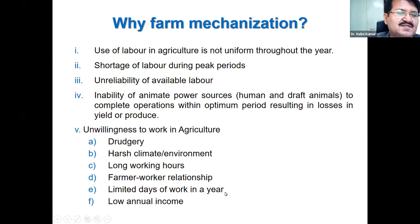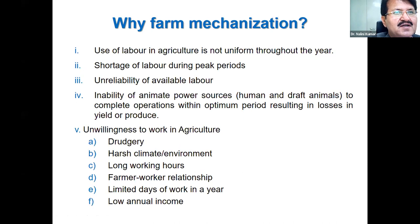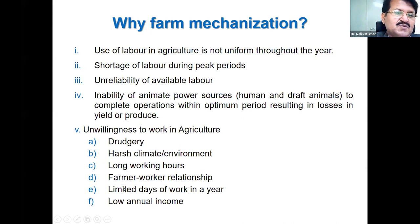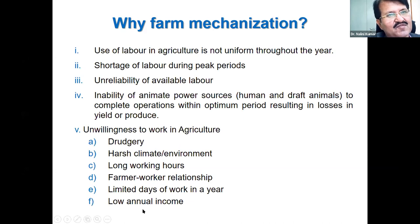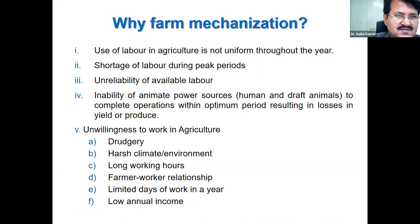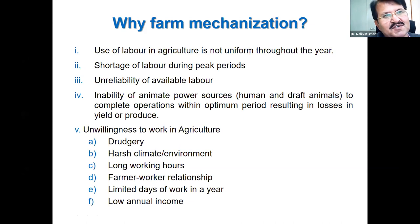Limited days of work in agriculture — for labor, work days are very limited. Getting 200 man-days of work is very tough; they used to get only 100–150 days of work and have to live on that income throughout the year, which is very meager. Low annual income in comparison to the non-agriculture sector also discourages people from working in agriculture.